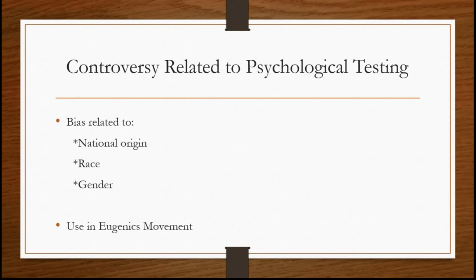I want to briefly mention some of the controversy related to psychological testing. One concern is that historically, a lot of tests have been developed by white, European-descended men, so the idea is that these tests may be biased to best measure the qualities of people who are like the test developers. There have been findings that people from different countries, races, and genders may not score as well on these tests, raising questions about how objective they really are. Probably the most controversial in this regard are some of the intelligence tests — books and documentaries have shown that people of different cultures tend to score less well than people of what we call a dominant culture, which in the U.S. would be white, middle and upper class people.